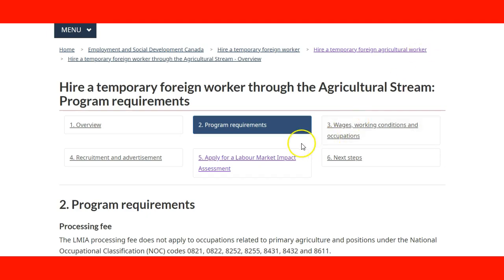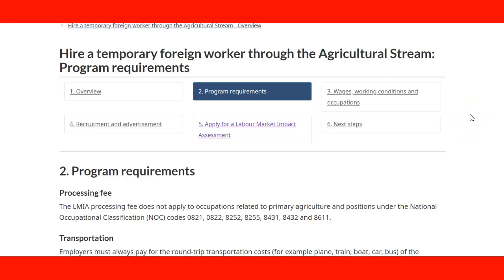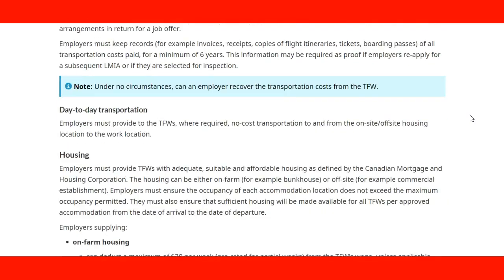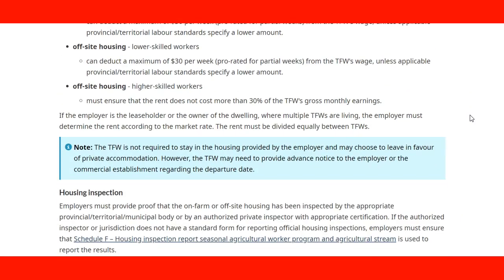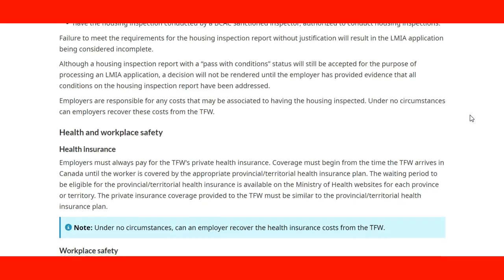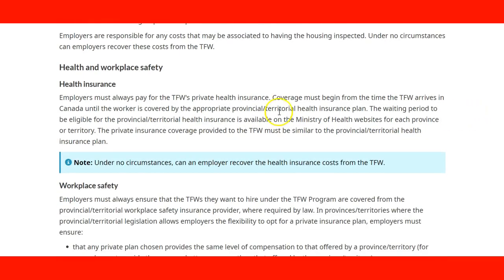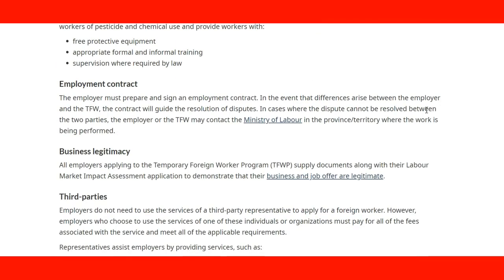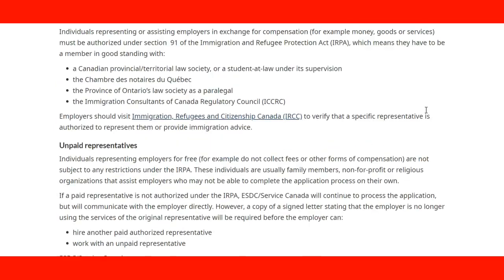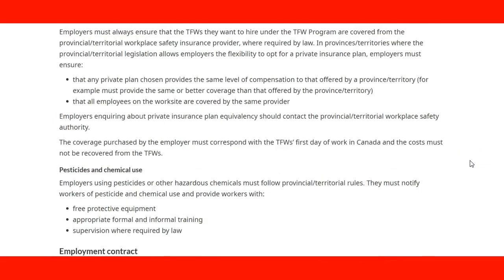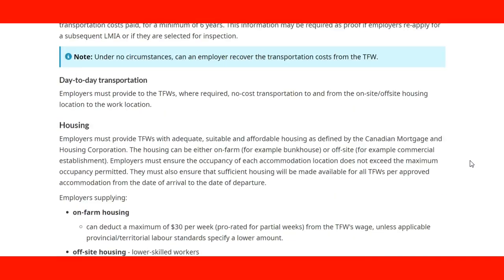Another website covers hiring temporary foreign workers through the agricultural stream of the Temporary Foreign Worker Program. It provides all information about the program including housing, definitions of employer requirements, health and workplace safety, health insurance, use of chemicals, employment contracts, and all information related to this program specifically. You can check more information by continuing to navigate that page.